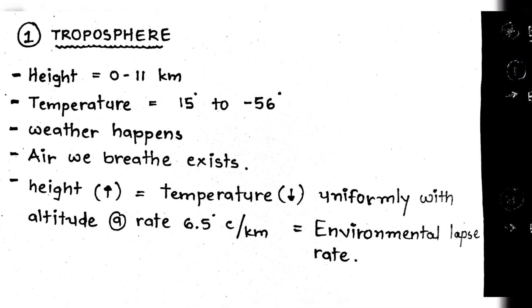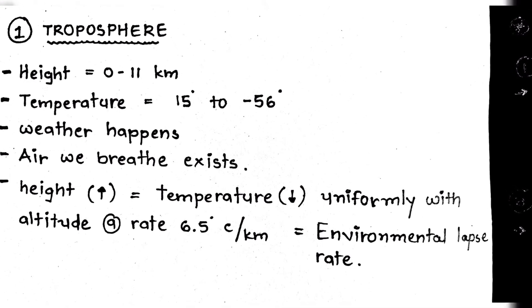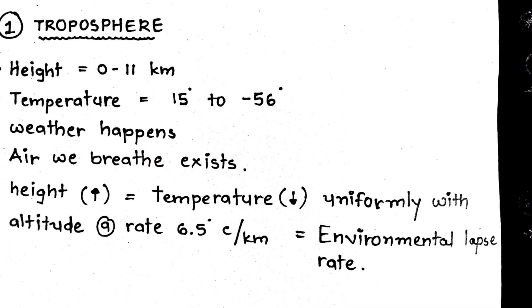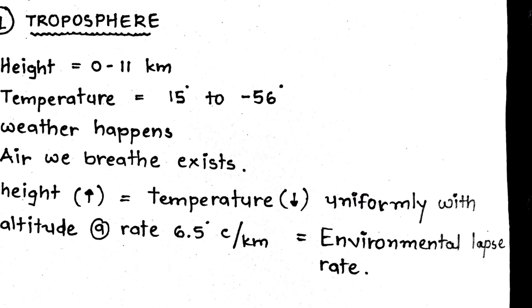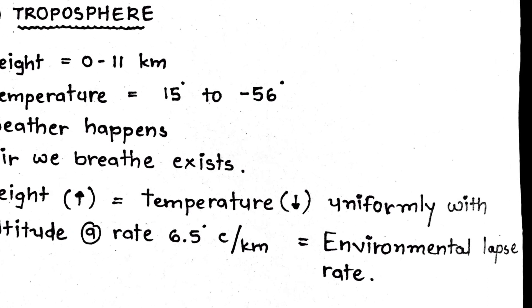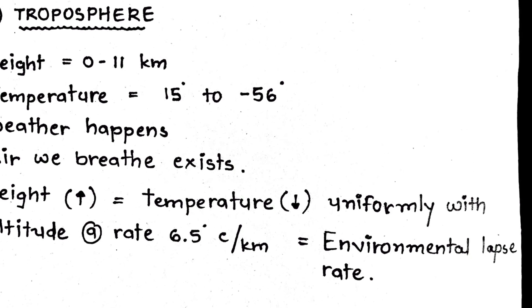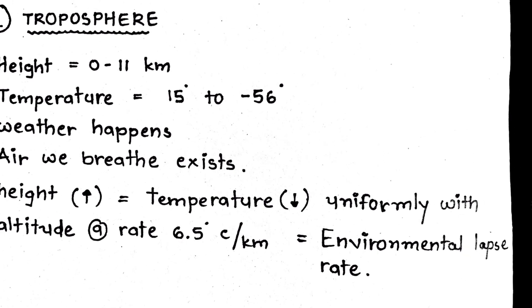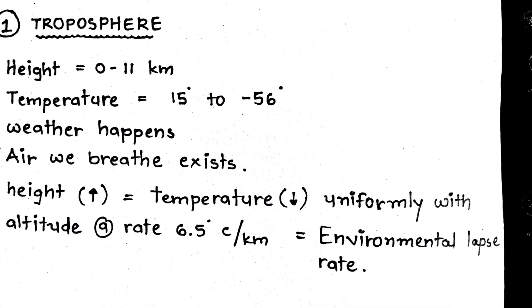It is the sphere where the weather happens and the air we breathe exists. With increasing height, air temperature drops uniformly with altitude at the rate of 6.5 degrees Celsius per kilometer, and this phenomenon is called environmental lapse rate.